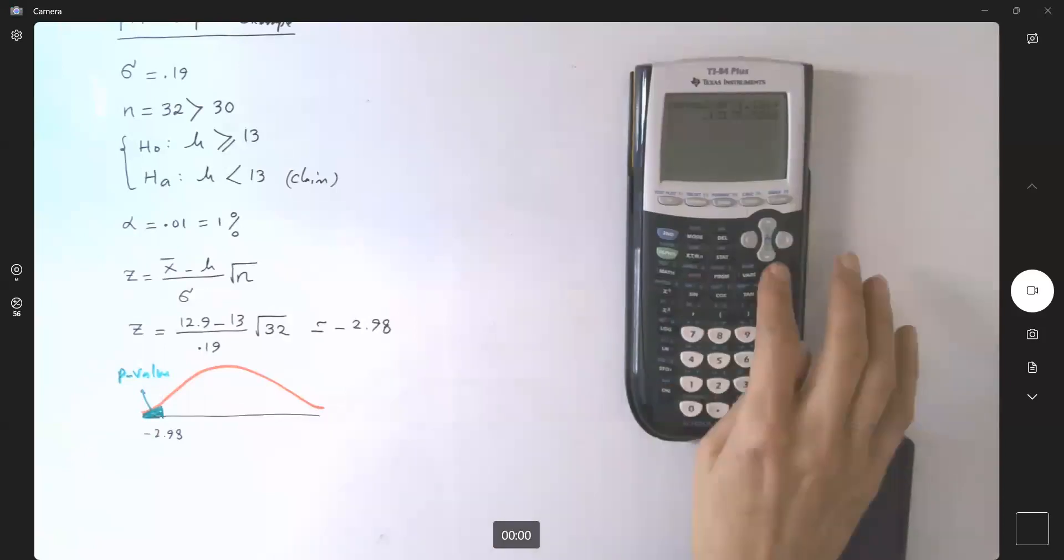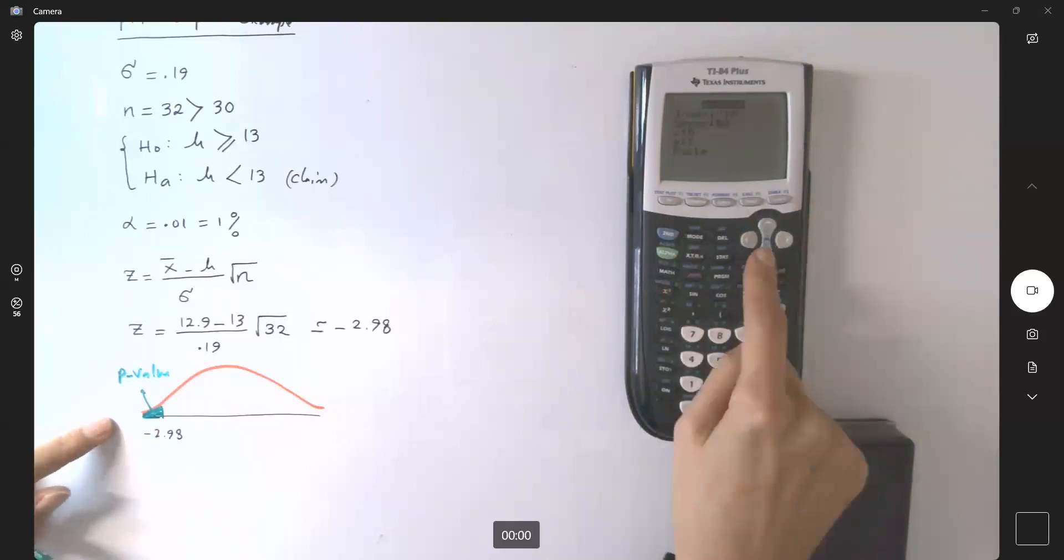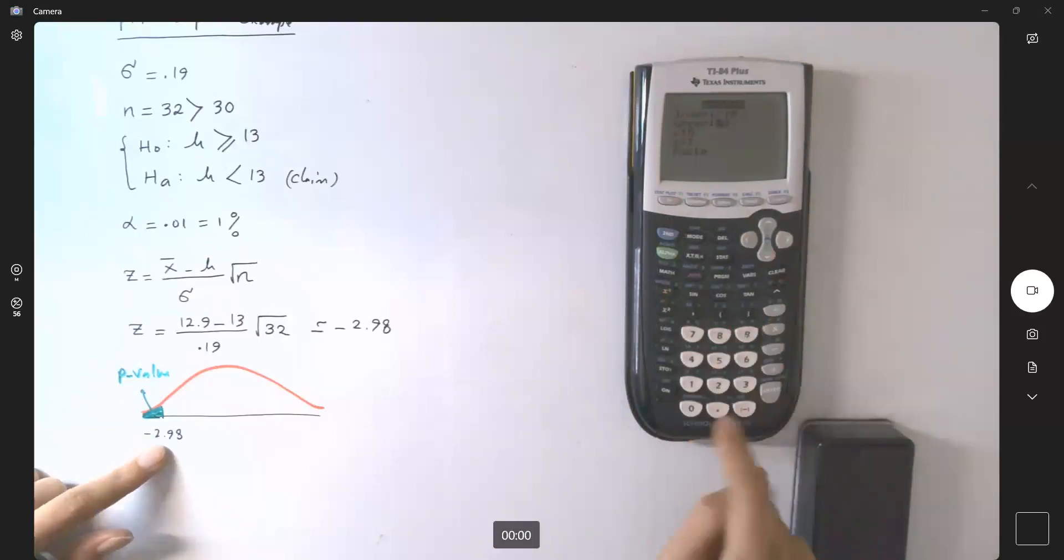So let's go back to our calculator. Second, then normal CDF. The lower limit on the left hand side is going to be a small negative number, so negative 10 for example, and the upper limit is negative 2.98.